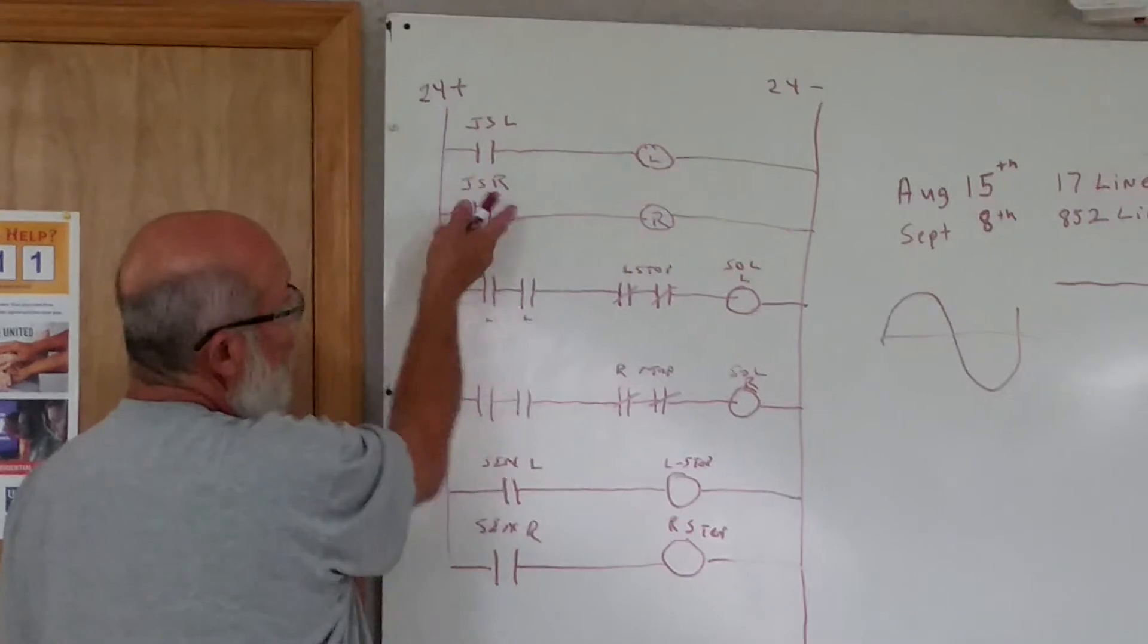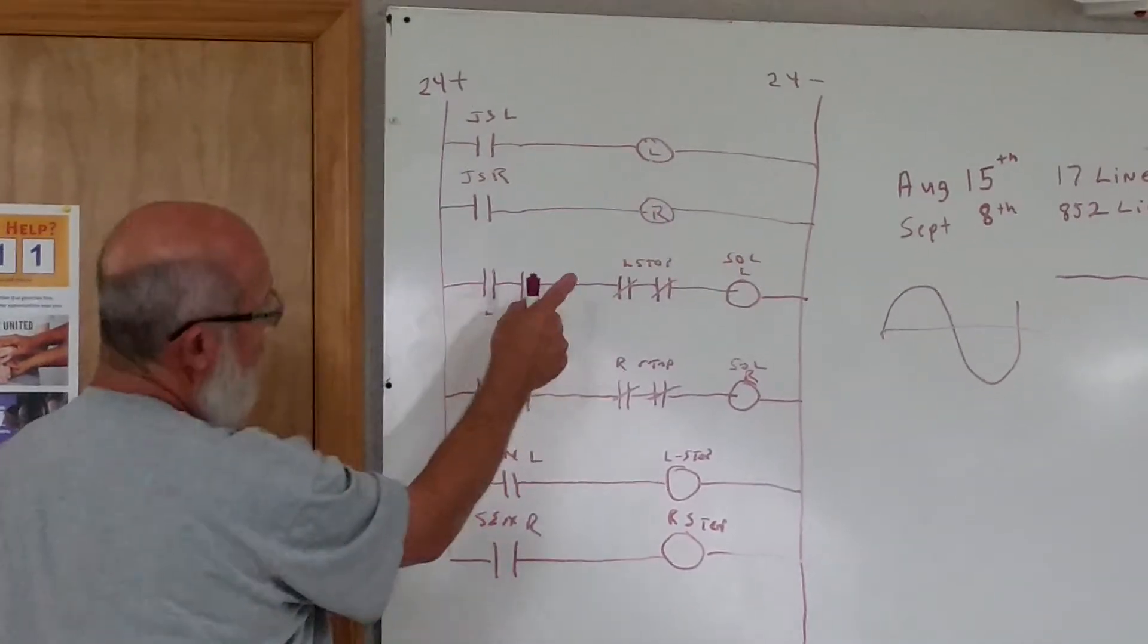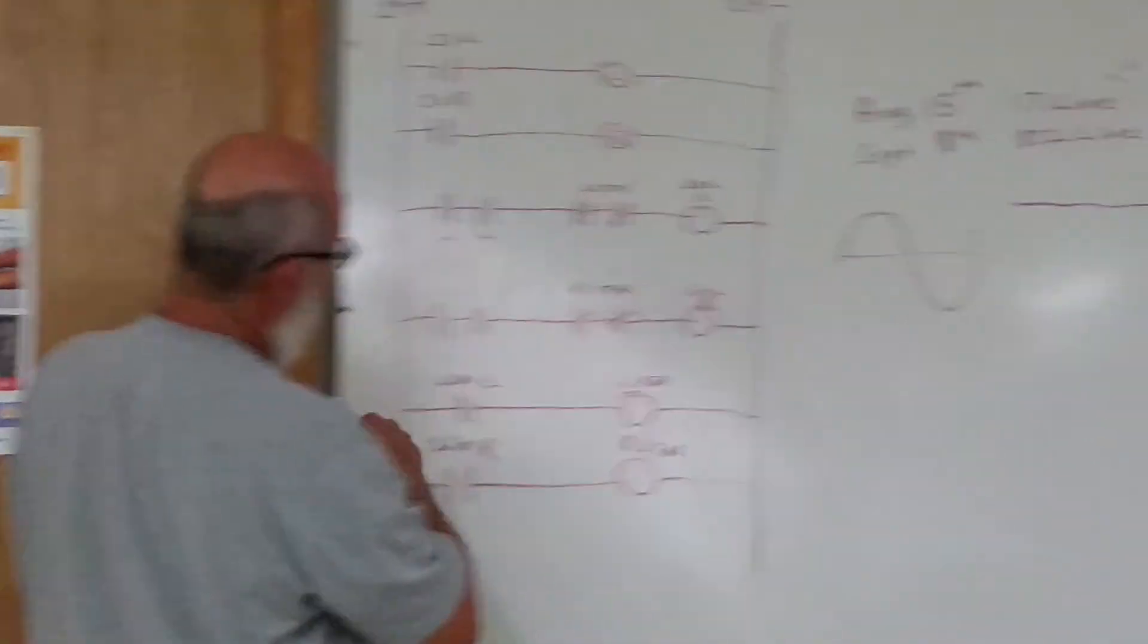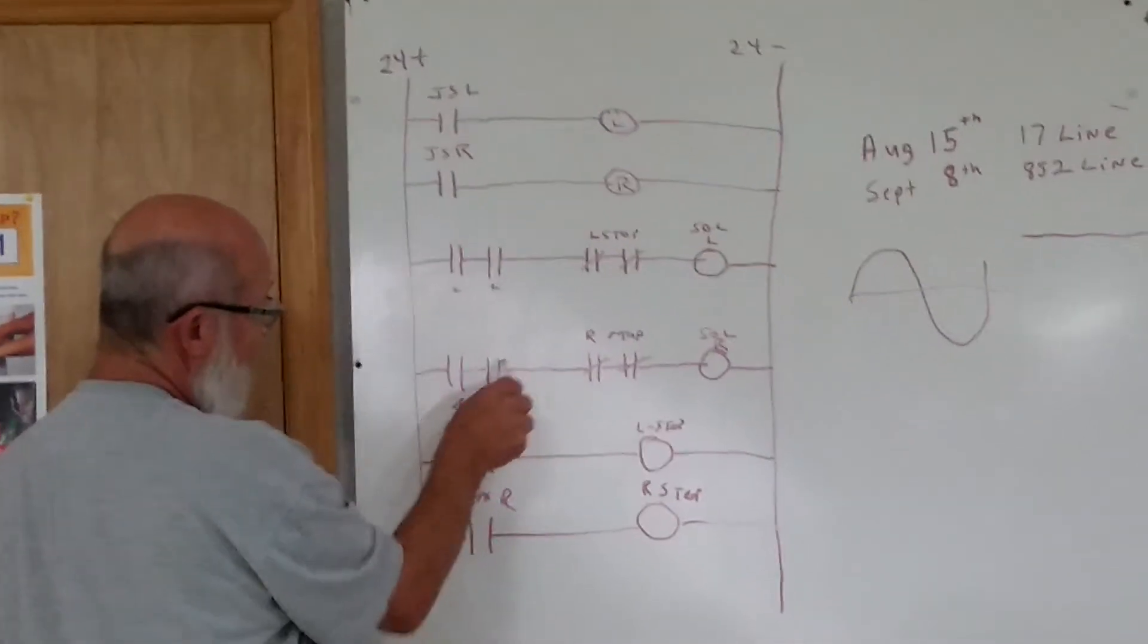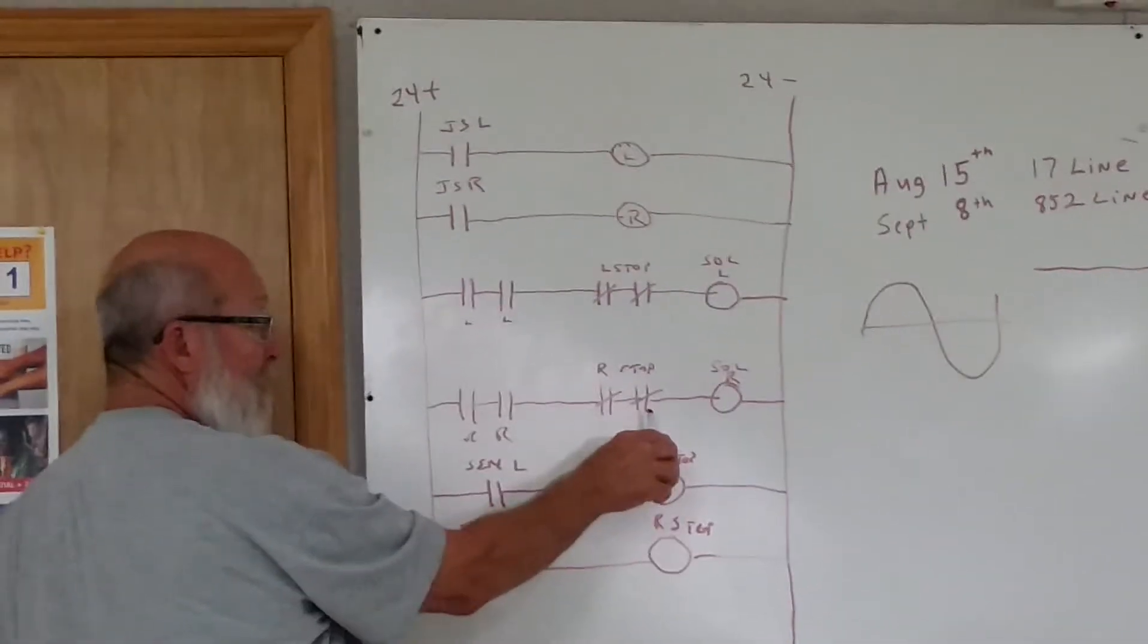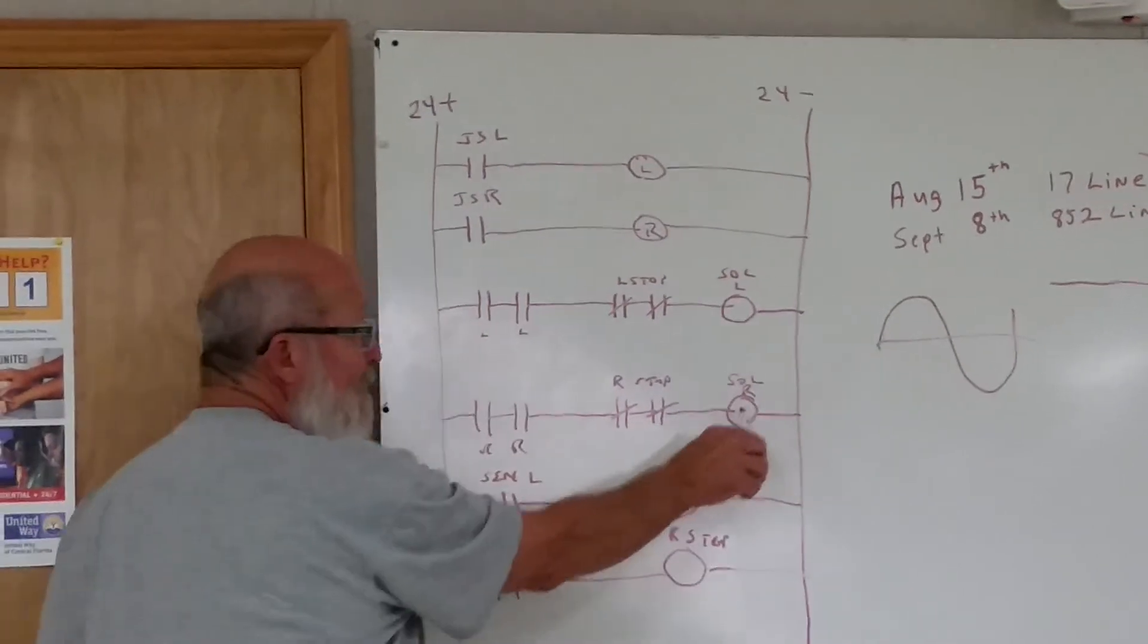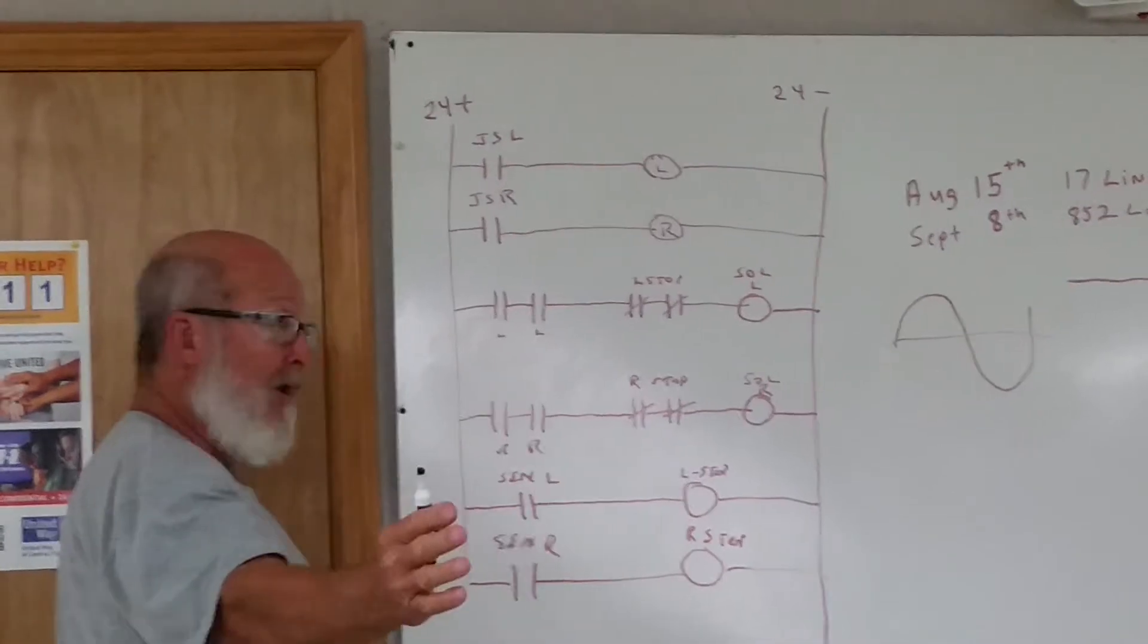So because he tells it to go to the right, it energizes the R. The R picks up, it's going to close. And this is what these are. When the R picks up, it's going to close these two contacts. It's going to go through the normally closed on the sensor, on the stop relay, it's going to pick up the right solenoid. It's going to swing all the way to the right.